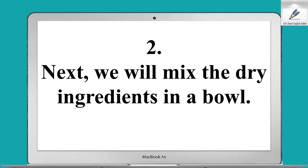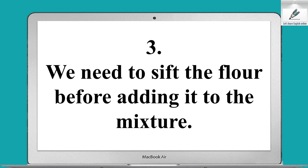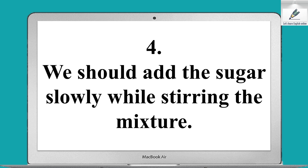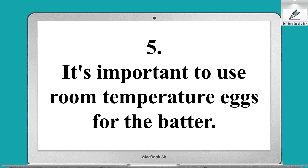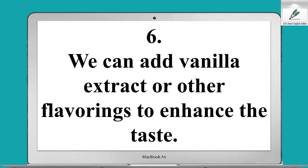Next, we will mix the dry ingredients in a bowl. We need to sift the flour before adding it to the mixture. We should add the sugar slowly while stirring the mixture. It's important to use room temperature eggs for the batter. We can add vanilla extract or other flavorings to enhance the taste.